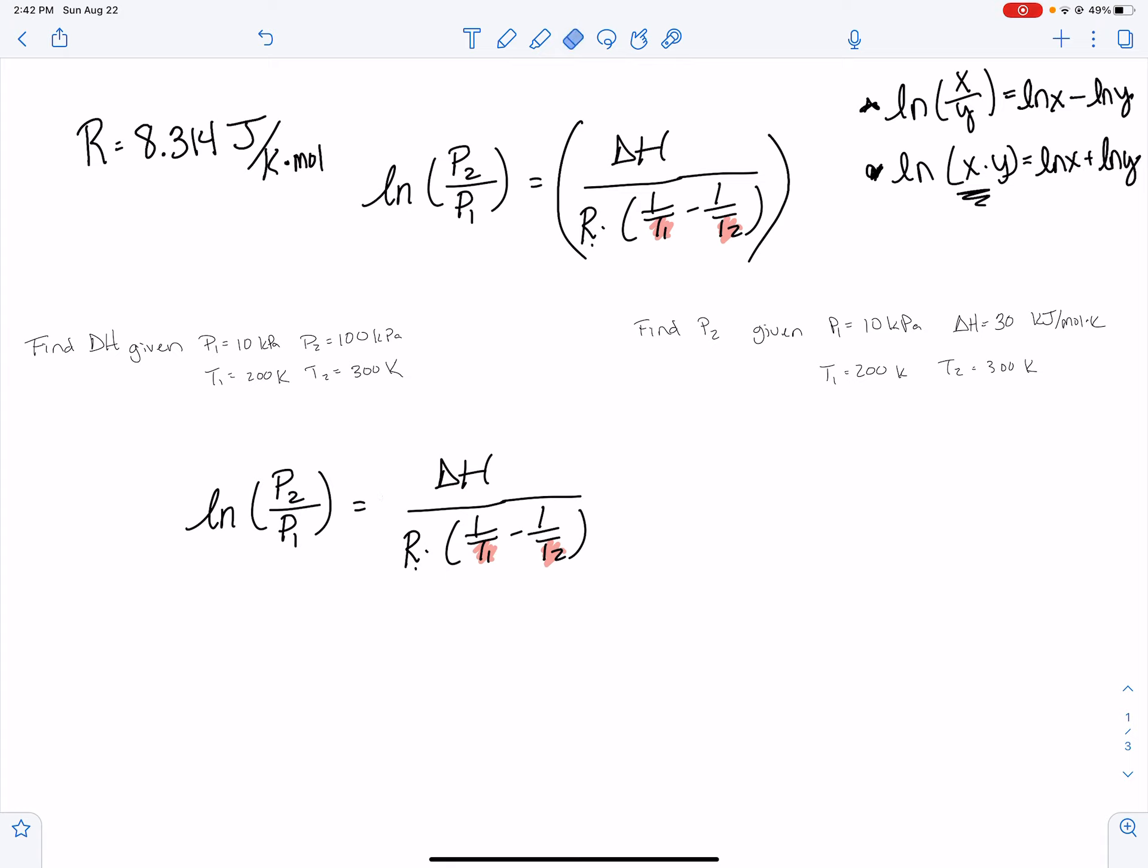I'm not going to worry about my parentheses at the moment. So now if I'm trying to solve for delta H, I just need the delta H right here by itself. So I need to multiply both sides by that term.